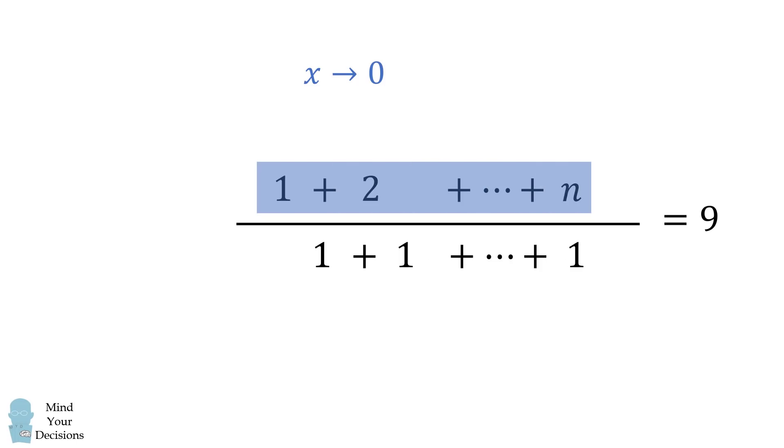We then want to calculate the sum in the numerator. This is the sum of the numbers from 1 to n, which is a well-known formula for triangular numbers. Tn is equal to n multiplied by the quantity n plus 1 all over 2. We'll substitute that in. The denominator will have exactly n terms, each term equal to 1, so this sum will be equal to n.